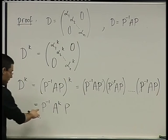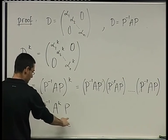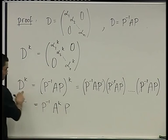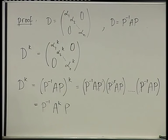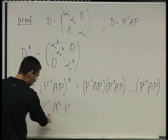So P inverse, A to the power of K, P equals D to the power of K, which is in turn this thing.